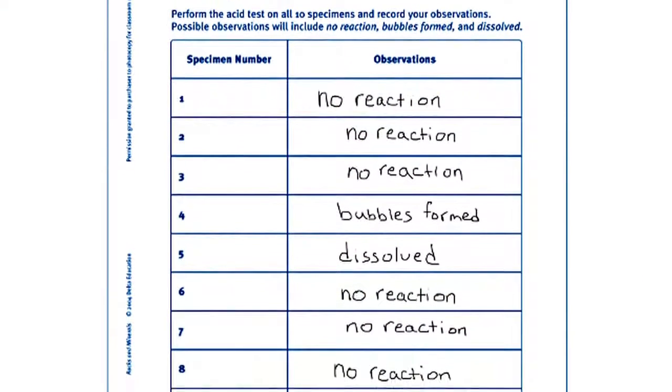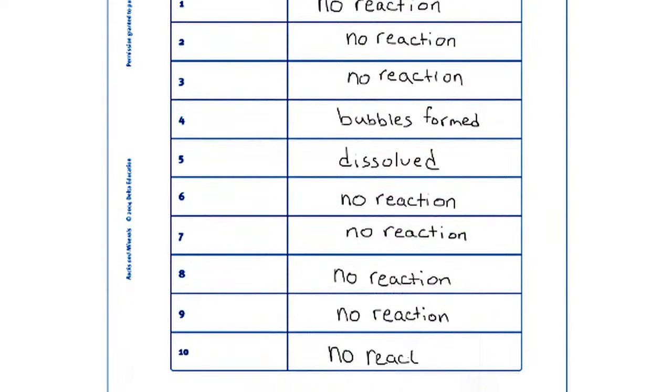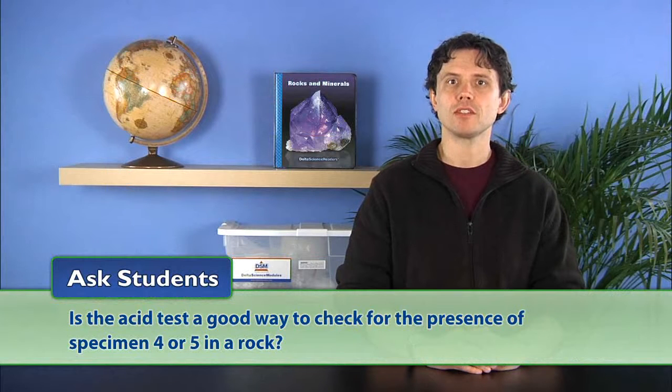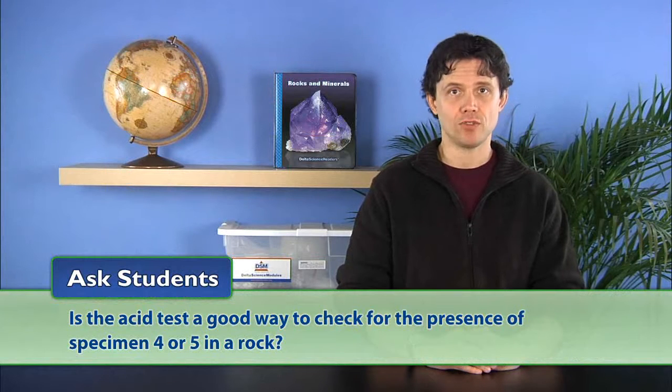Next, have students record their observations on activity sheet six and lead the class in discussion of their test results. Remind students that rocks are made up of minerals. Ask students: is the acid test a good way to check for the presence of specimen four or five in a rock?